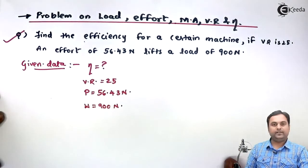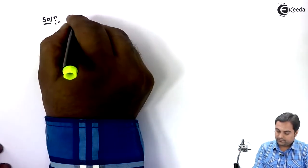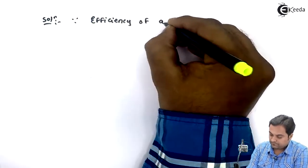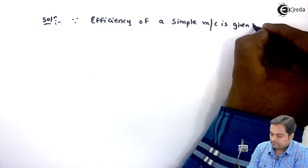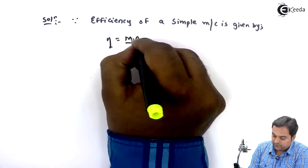We need to calculate only efficiency here. So I'll write down solution. Since efficiency of a simple machine is given by: efficiency is equal to mechanical advantage upon velocity ratio.